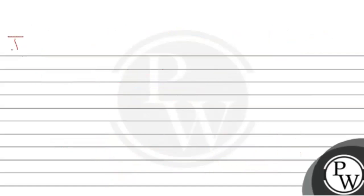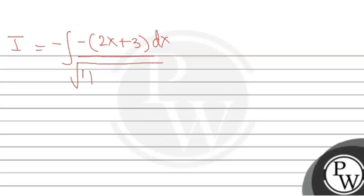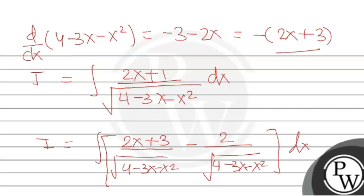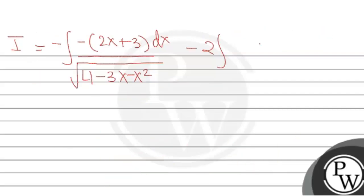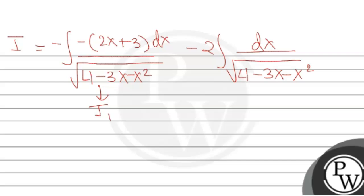Simplifying further, I equals the integral of (2x + 3) upon √(4 - 3x - x²) dx, minus 2 times the integral of dx upon √(4 - 3x - x²). We will call the first integral I1 and the second integral I2, and solve them separately.